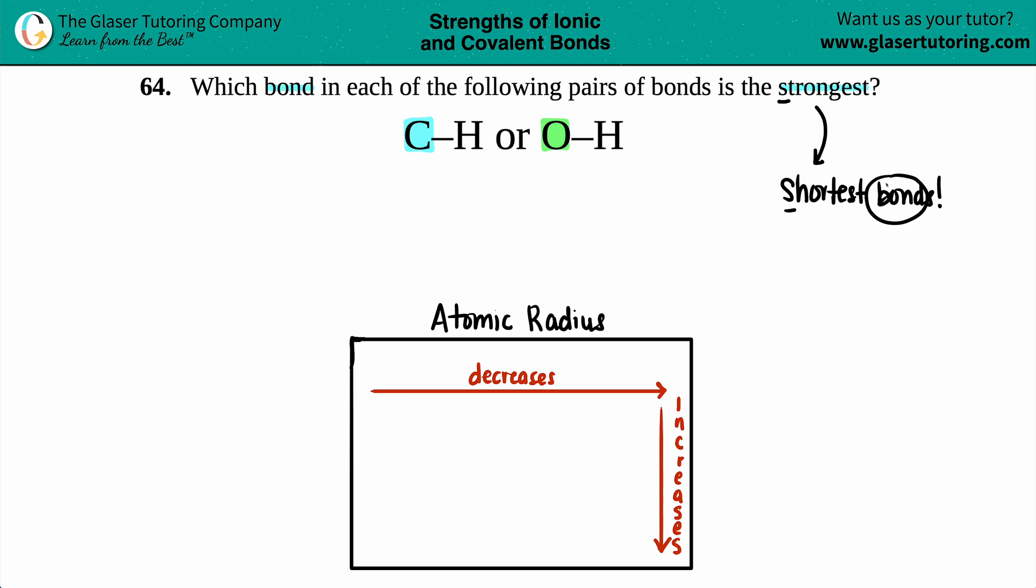Same type of idea in chemistry. Now just know that idea comes from your atomic radius trend. We have to find out where carbon and oxygen are on the periodic table.